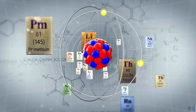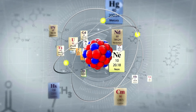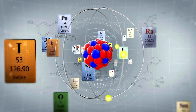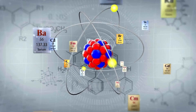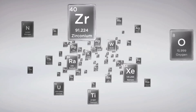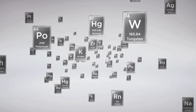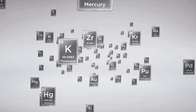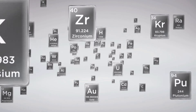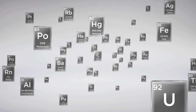A periodic table is a tabular arrangement of chemical elements organized by increasing atomic number, electron configurations, and recurring chemical properties. Let's learn all the periodic elements name.